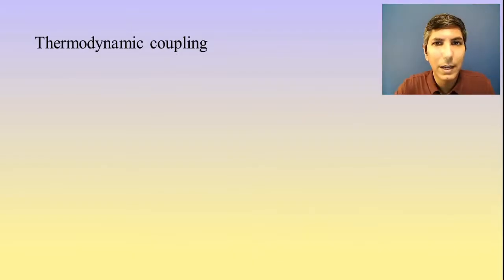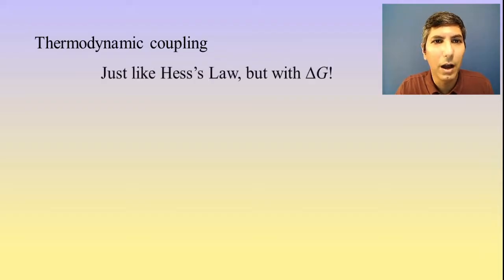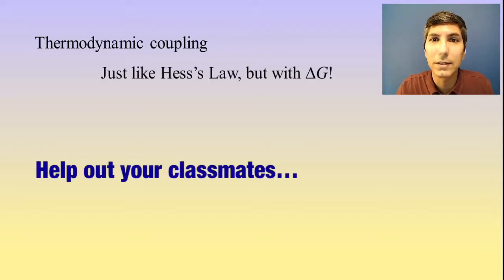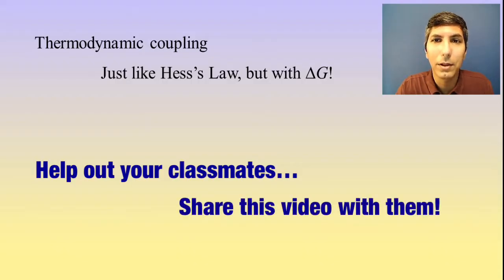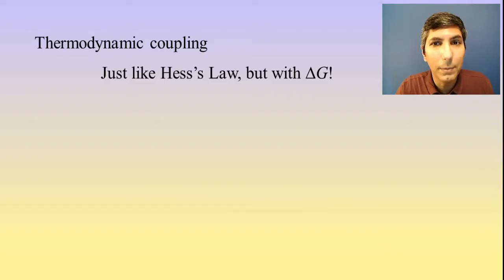Now, sometimes there are chemical processes that we would really like to happen that, to be honest, just do not happen. This is a lot like Hess's law that we learned in unit six, but we can't call it Hess's law because it's not change in enthalpy. This is delta G. This is called thermodynamic coupling.